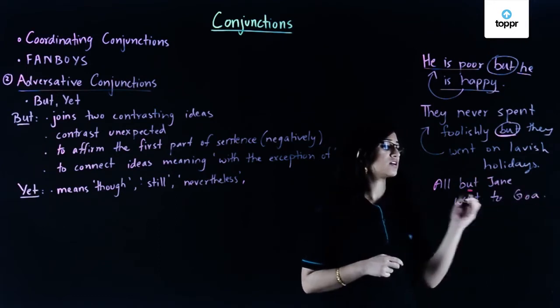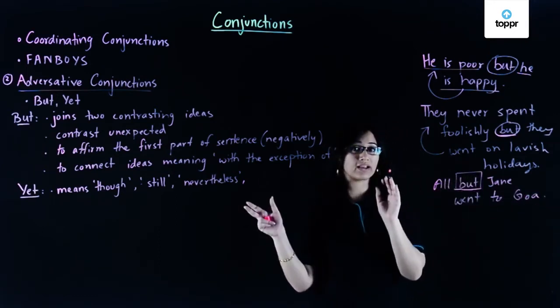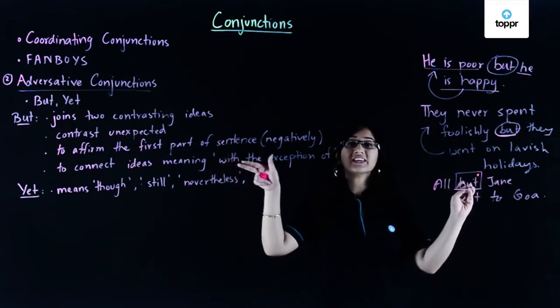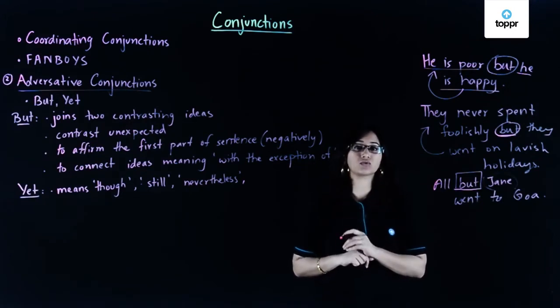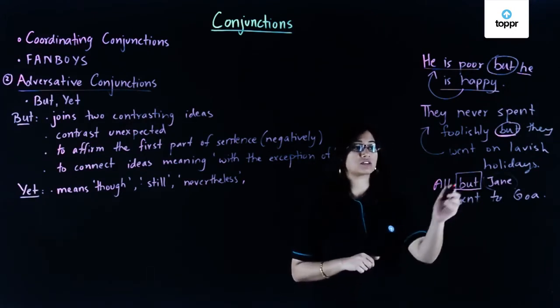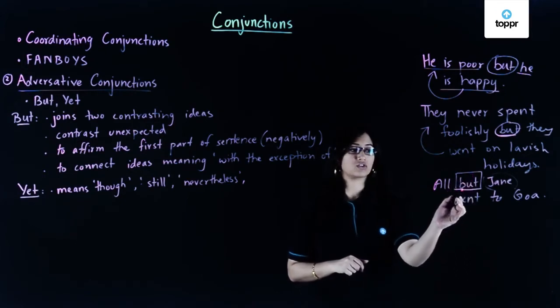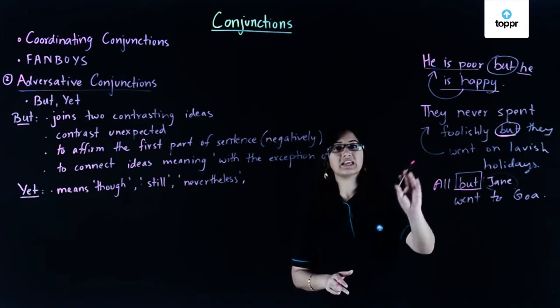So here I'm using the word but to show that everyone went except for, or with the exception of, Jane. And here I'm using it as an adversative conjunction because I am showing contrast. So the contrast is that Jane did not go and everybody else went.